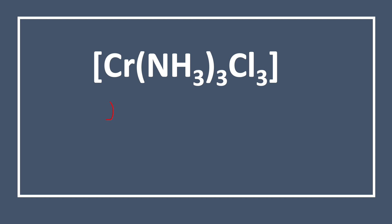For chromium we assign X, and NH₃ is a neutral ligand so its oxidation number is 0. There are 3 NH₃ molecules. The next ligand is chlorine, and chlorine has an oxidation number of minus 1. There are 3 chloride ions in this complex.